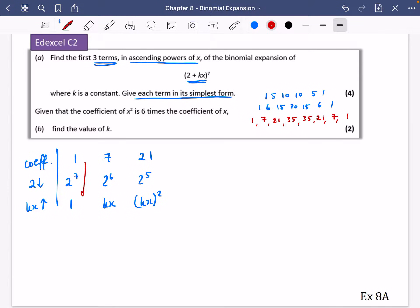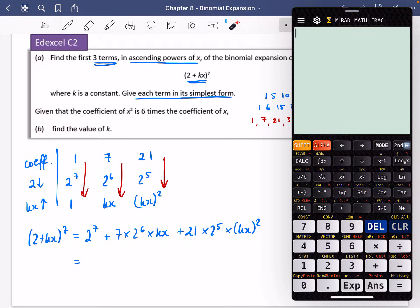OK, so as we multiply down by these, we'll get what the expansion should be. So 2 plus kx to the power of 7 is going to be equal to 1 times 2 to the power of 7 times 1. 7 times 2 to the power of 6 times kx. And 21 times 2 to the power of 5 times kx all squared. And it does say that it wants each term in its simplest form. So I'm going to make sure I simplify all of this. So I'm going to do my 2 to the power of 7. That's 128.